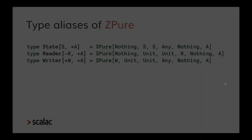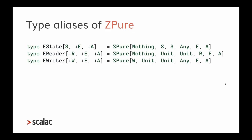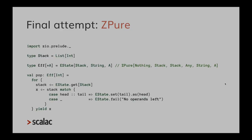ZPure has many type parameters, but you don't need to use them all at once. If you just want the state effect there is a type alias for that, and similarly for Reader and Writer. There are also type aliases for errorful versions: EState models state and errors, and there are similar aliases for EReader and EWriter.